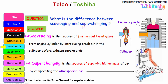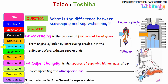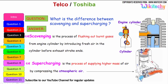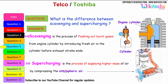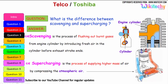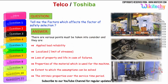What is the difference between scavenging and supercharging? Scavenging is the process of flushing out the burnt gases from the engine cylinder by introducing fresh air into the cylinder before the exhaust stroke ends. Supercharging is the process of supplying high masses of air by compressing above atmospheric pressure — high pressure air is injected into the cylinder to compress the atmospheric air.